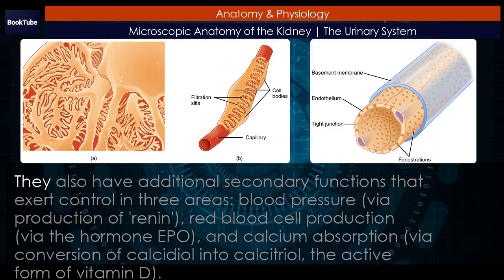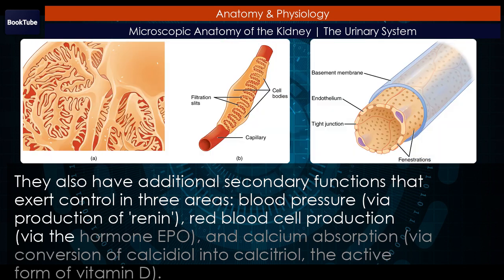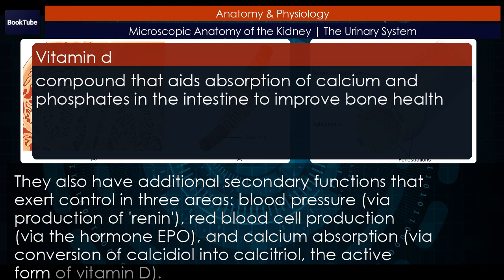Nephrons also have additional secondary functions that exert control in three areas: blood pressure, via production of renin; red blood cell production, via the hormone EPO; and calcium absorption, via conversion of calcidiol into calcitriol, the active form of vitamin D.